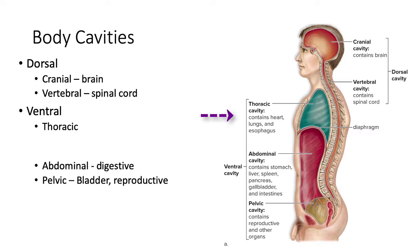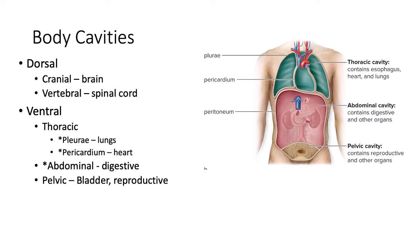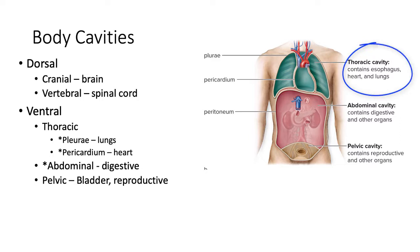The thoracic cavity is made up of several even more specific cavities called the pleura and the pericardium. The pleura contains the lungs and the pericardium contains the heart. Looking at an anterior view, you can see that each lung is within its own pleural cavity and the heart is within the pericardial cavity. Both of these spaces are within the thoracic cavity, which is inside the ventral cavity.